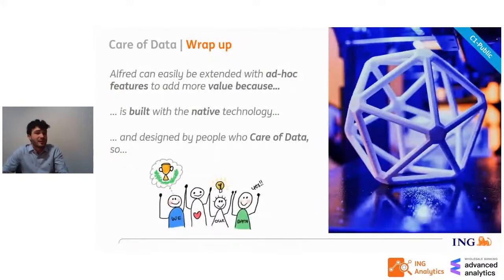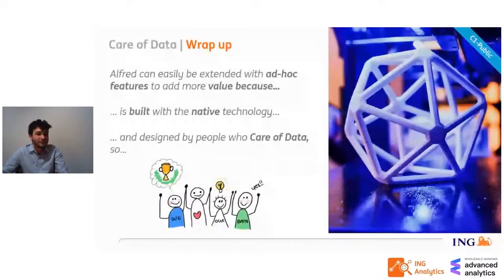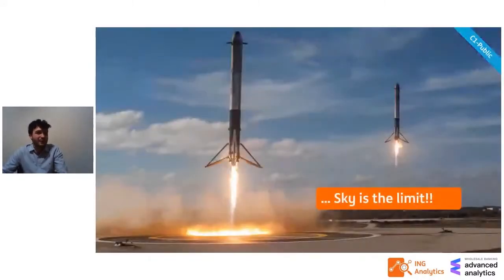In conclusion, Alfred gives many features to the whole pipeline, but can also be extended based on our needs because it's a custom product. We built it from scratch, and everything that we need can be added as a new feature. We are using it to manage all our data lake processes and we keep adding more and more features and improvements since its first release. Alfred is built with native technology and designed with an engineered approach using available tools on data lake environments — we are not using third-party tools. Alfred is designed by people who cover data. This is the most important thing, so there are almost no limits to what we can do and what we can build.